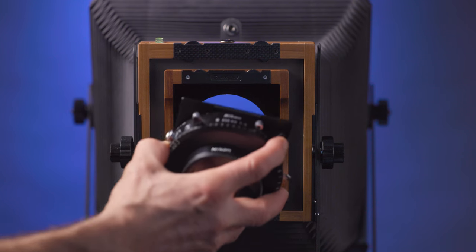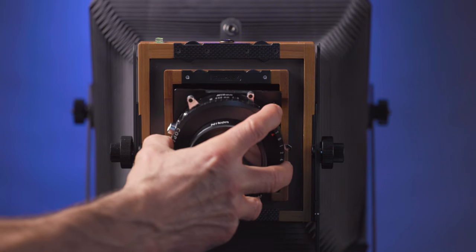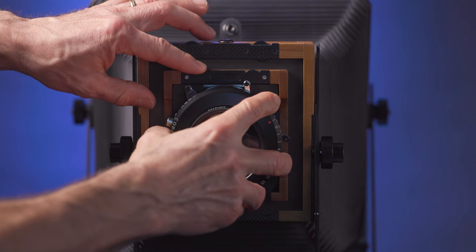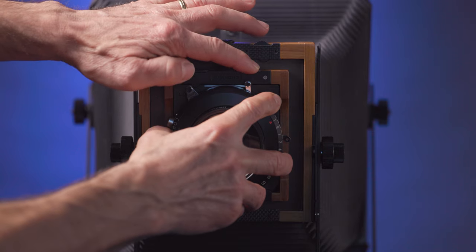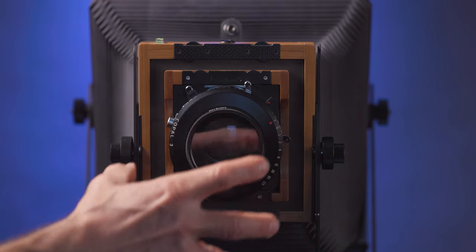Since my large format kit includes lenses mounted in Linhof type lens boards, I also purchased the Linhof to Sinar lens board adapter. This adapter continues the camera design with a black felt lined light trap and secures the lens board in an identical fashion.